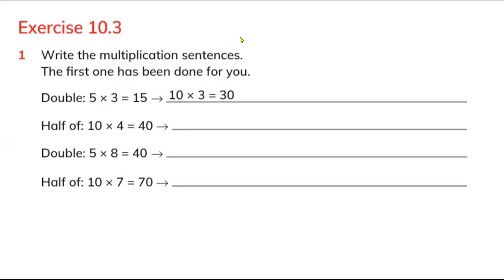So let's take the pen. Half of 10 times 4 equals 40, and double 5 times 8 equals 40. Half of 10 times 7 equals 70.